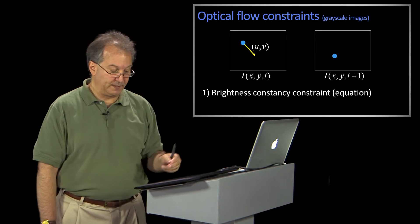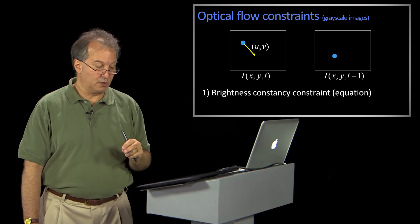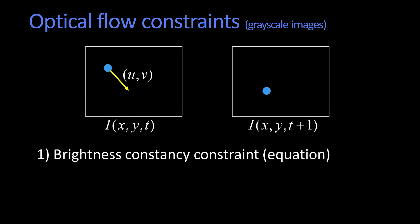So let's look at these equations a little more carefully. So the brightness constancy equation. What we're going to do is assume we know that some pixel is moving an amount u, v. U is the amount in x, v is the amount of y, when we get to t plus 1, okay?